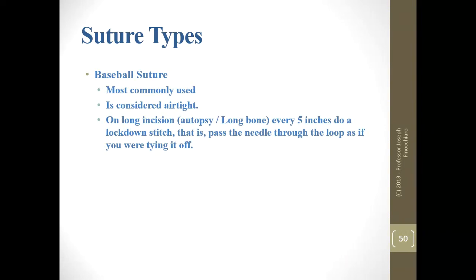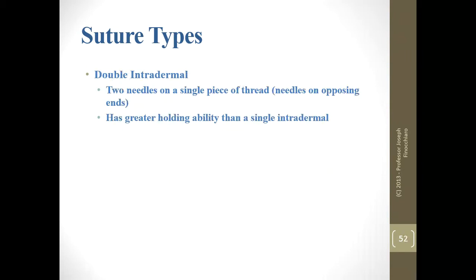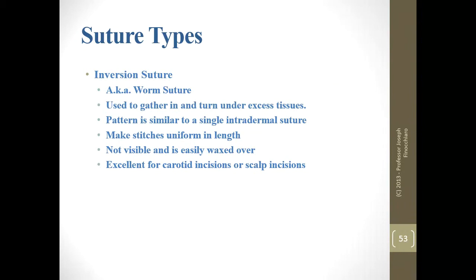The baseball suture is the one most commonly used — considered airtight but not watertight. On long incisions, every five to six stitches do a locking stitch so you do not undo your work. The intradermal or hidden suture uses one needle and a single thread on visible areas. Line up your margins — things need to match up, leave no gaps between stitches. Puckering occurs if you pull the thread too tight. This is not airtight and certainly not watertight. The double intradermal is the same thing with two needles on a single thread and has greater holding ability. The inversion or worm suture gathers in and turns excess tissue — make stitches uniform in length. It's not visible and is easily waxed over — excellent for carotid incisions or scalp incisions, though generally not airtight.